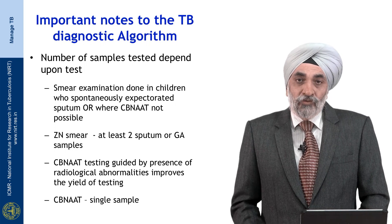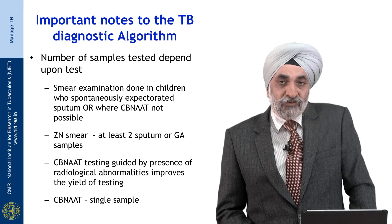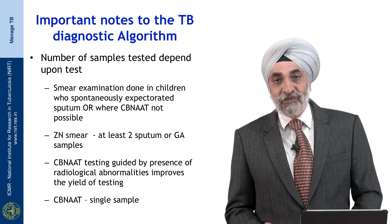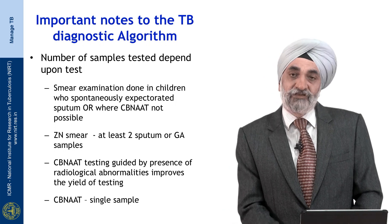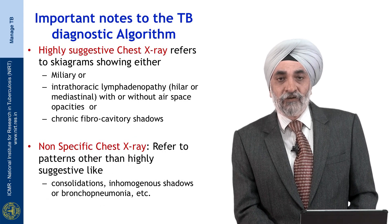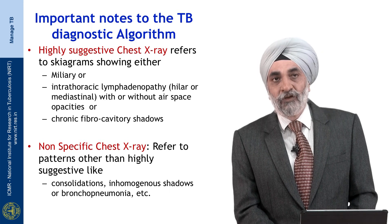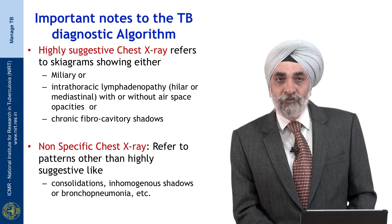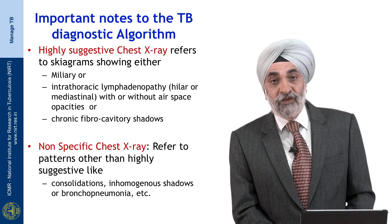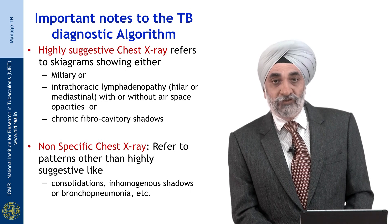When it comes to respiratory specimens, what samples are tested depends on available facilities. If you have smear facilities only, you need at least 2 consecutive day samples. If you have GeneXpert, you do not go for smear testing — a single sample suffices. Remember the highly suggestive X-rays refer to miliary TB, intrathoracic lymphadenopathy, and chronic fibrocavitary pneumonia. Non-specific shadows like consolidations, inhomogeneous shadows, or bronchopneumonia require a course of antibiotics first, and non-response to that antibiotic course makes TB more likely.